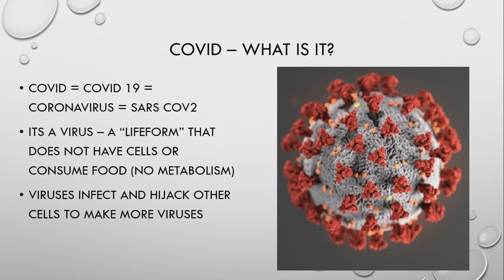COVID, COVID-19, coronavirus, and SARS-CoV-2 are all basically the same thing — any of those terms means the same thing. There are some technical differences. COVID and COVID-19 are the technical name for the disease caused by the virus coronavirus. And technically, coronavirus is the name of a family of viruses, so there are lots of different types of coronaviruses. However, there's only one type of this particular coronavirus, which is called SARS-CoV-2 — and COV stands for coronavirus. So what is a virus exactly? It's a life form that does not have cells or consume food, so it doesn't have a metabolism. It's tinier than a cell — tinier than even the smallest cell of a bacteria.